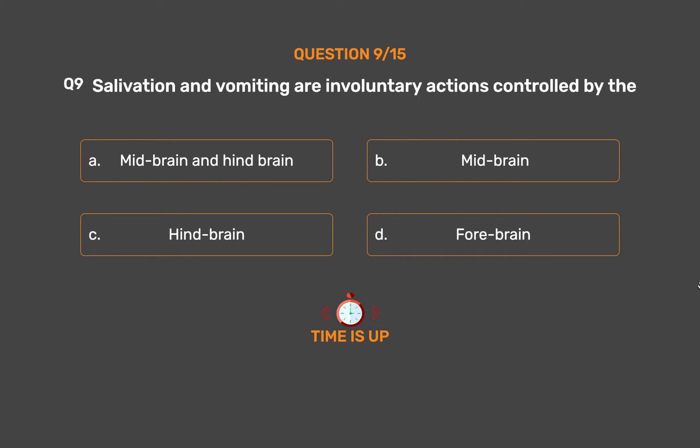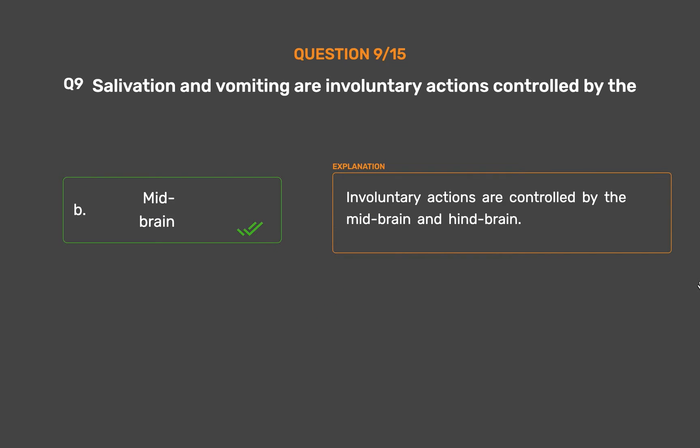The correct answer is Option B, Midbrain. Involuntary actions are controlled by the midbrain and hindbrain.